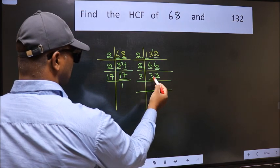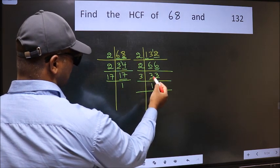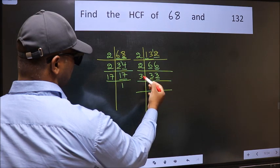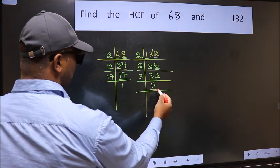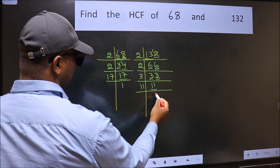First number 3, when do we get 3 in 3 table? 3 ones 3. The other number 3, when do we get 3 in 3 table? 3 ones 3. Now 11, 11 is a prime number, so 11 ones 11.